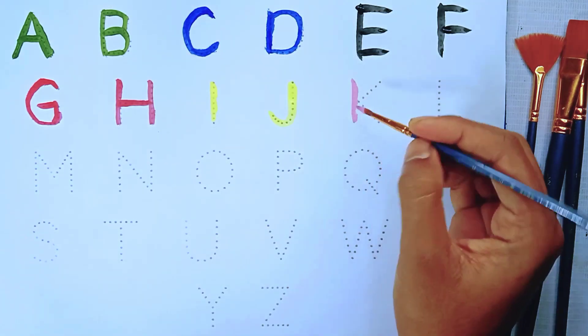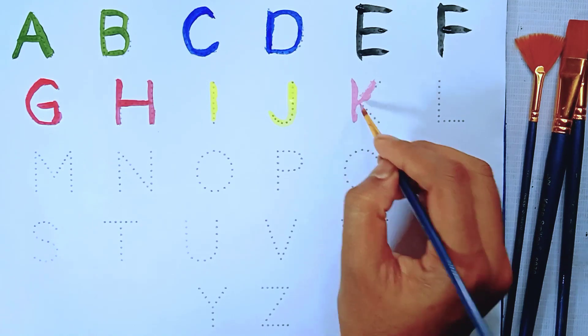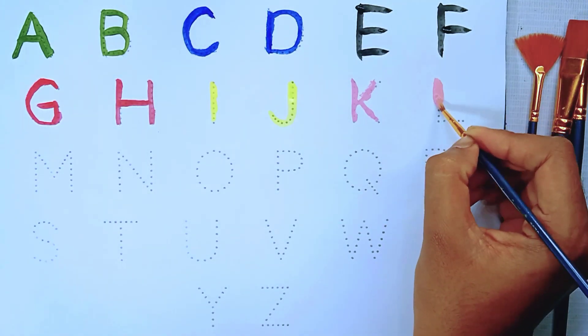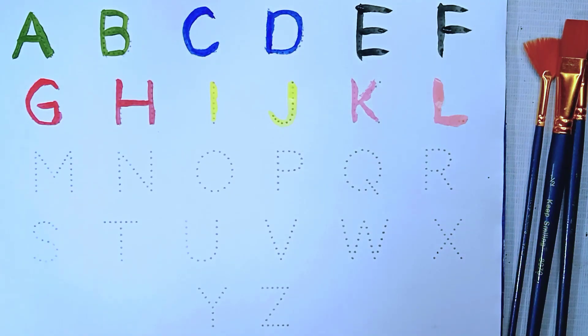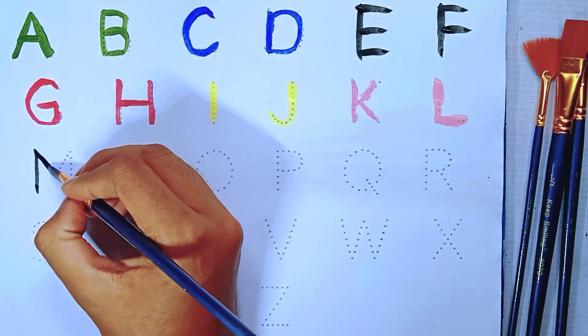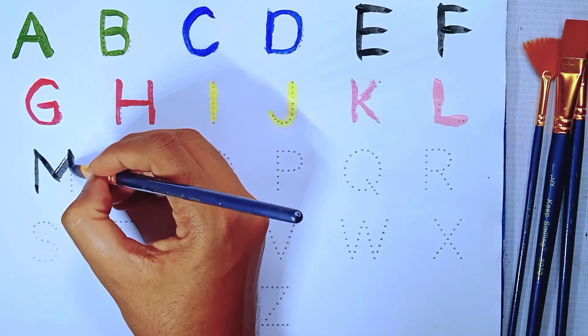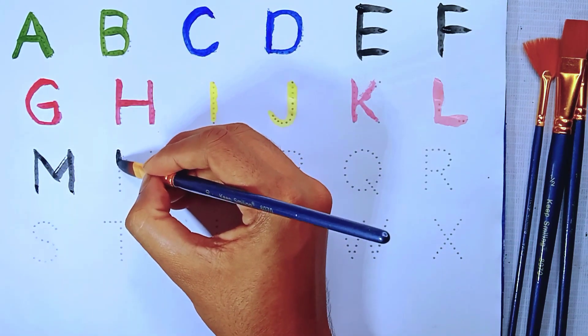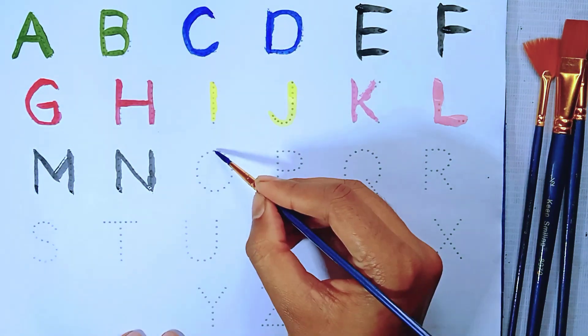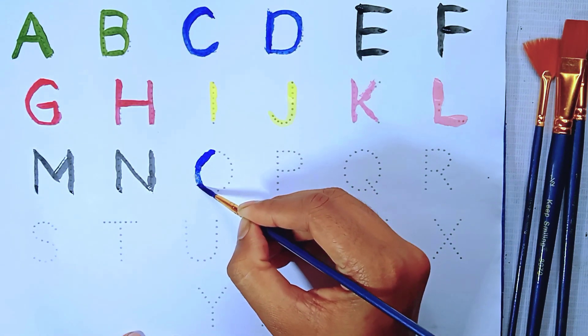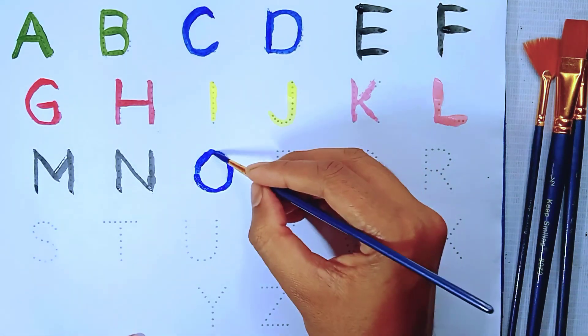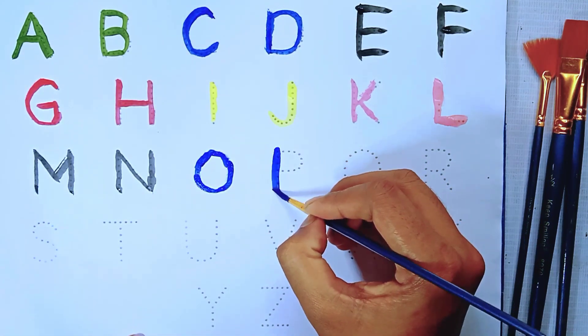G is for kite. M is for mango. N is for nest. O is for orange. P is for potato.